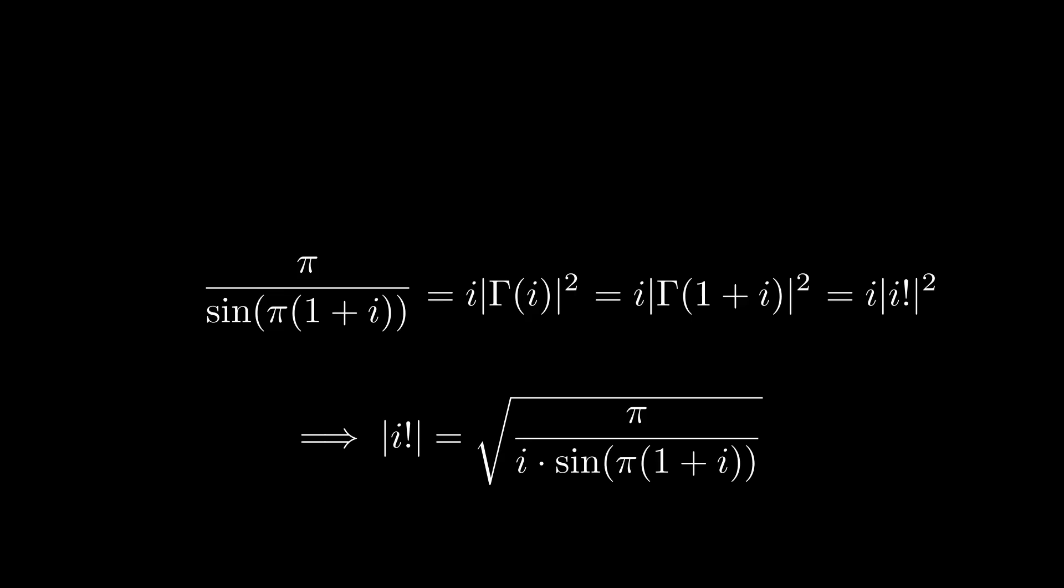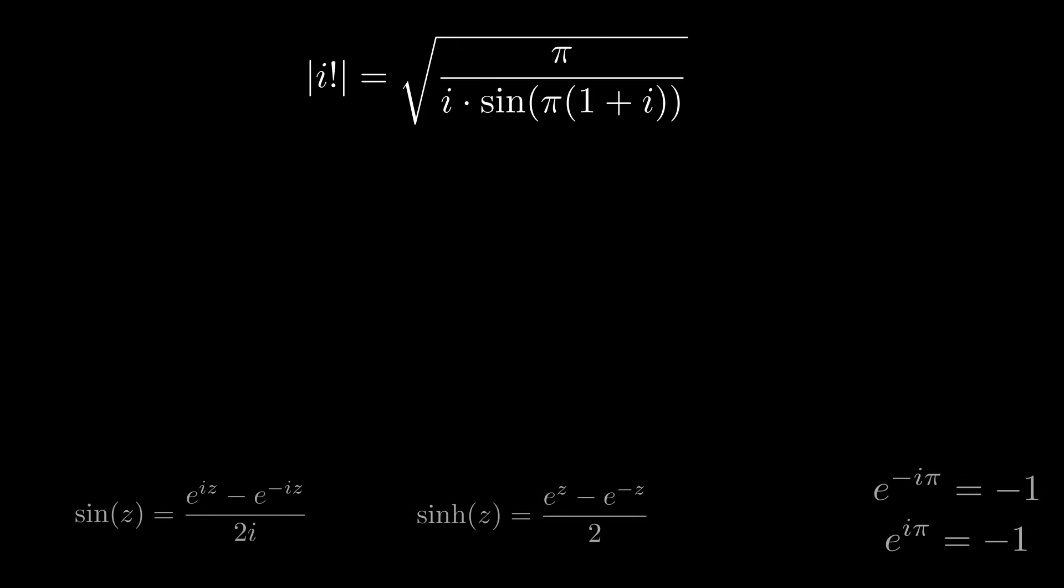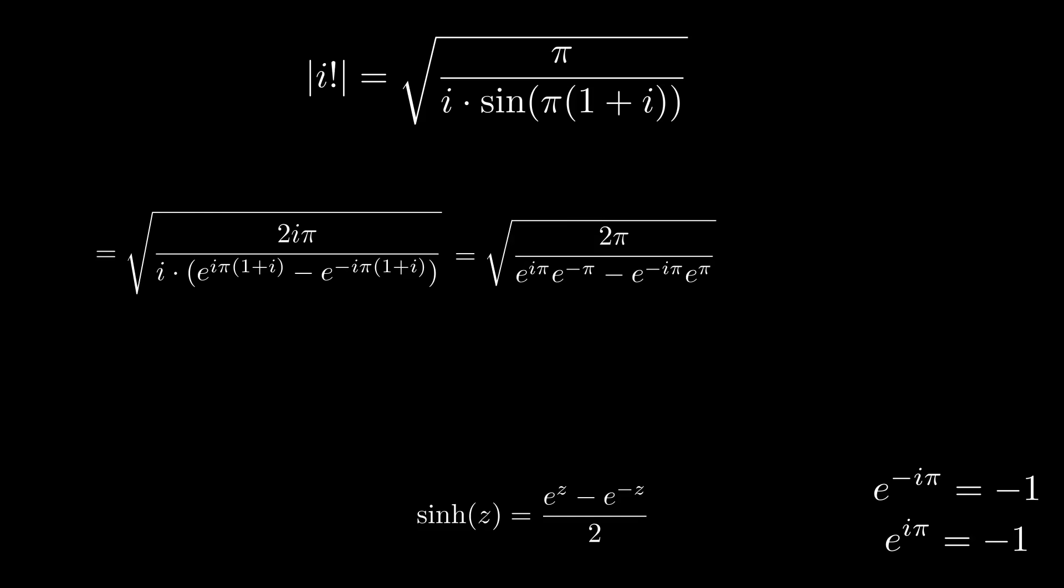And I know I told you we had all the tools, but I didn't want to overwhelm you at the start. There's two more definitions we can use here, namely the definition of hyperbolic sine and Euler's formula we can use to simplify this expression. Sine of pi times 1 plus i, this is basically the reciprocal of the complex sine function. We can play around with properties of exponents, cancel out those i's, apply Euler's formula. E to the i pi is negative 1. And this happens to be the definition, or rather the reciprocal definition, of hyperbolic sine of pi. So pi over hyperbolic sine of pi is the absolute value of i factorial squared, or i factorial is the square root of pi over hyperbolic sine of pi.